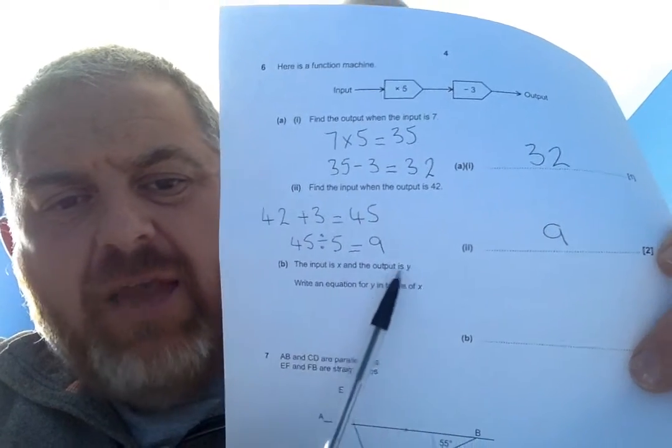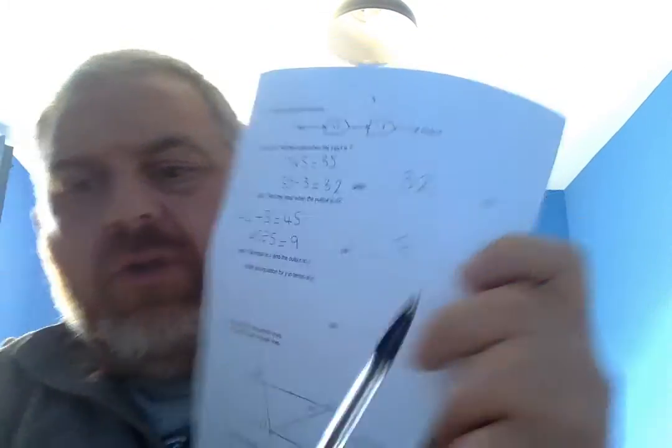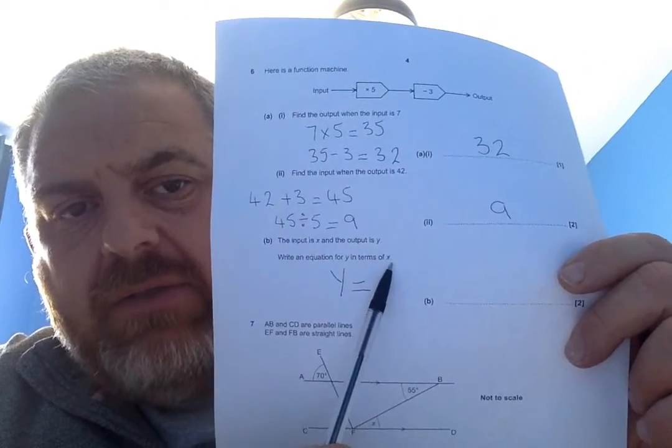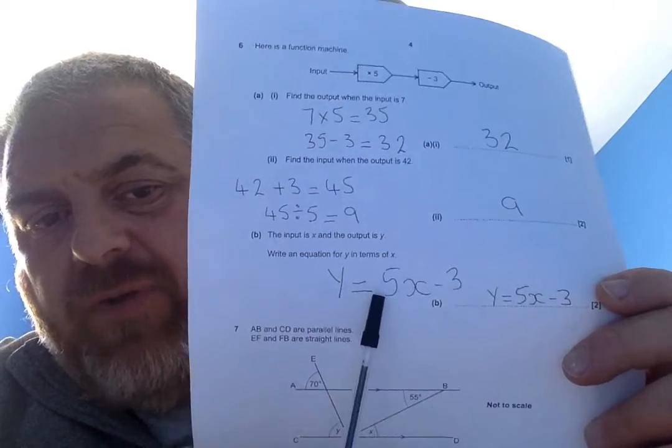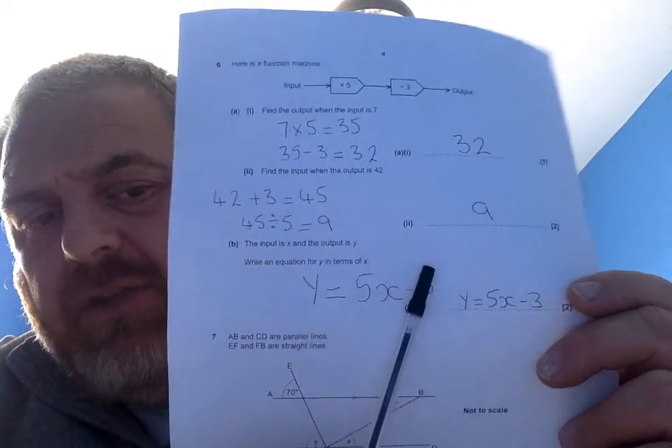So, get your head around this. The output is y. So, my output equals something to do with x and then a minus 3. So, my function is times by 5 minus 3. So, I'm going to show that by saying y equals 5 times my input of x minus 3.